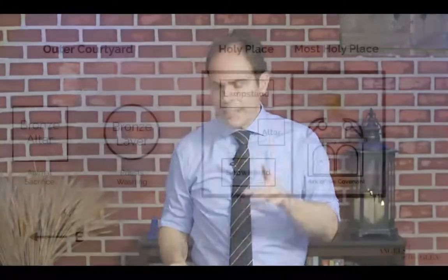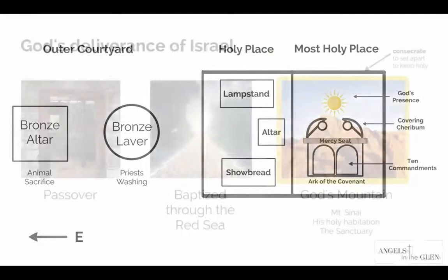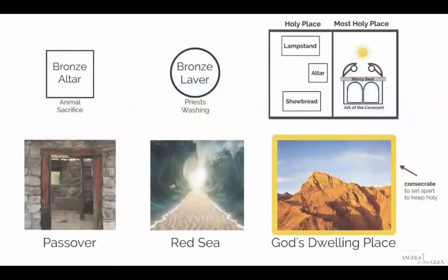Through that understanding of the sanctuary's pattern, we understand greater truths about God, his nature, his kingdom, and the true tabernacle in heaven. The layout goes east: bronze altar, bronze laver, then the tabernacle itself — the holy place and the most holy place — with the covering cherubim, God's shekinah glory above the cherubim, and below the mercy seat, the ark of the covenant containing the Ten Commandments. The passover matches the bronze altar, the Red Sea matches the laver, and God's dwelling place on the mountain matches the holy place and most holy place.